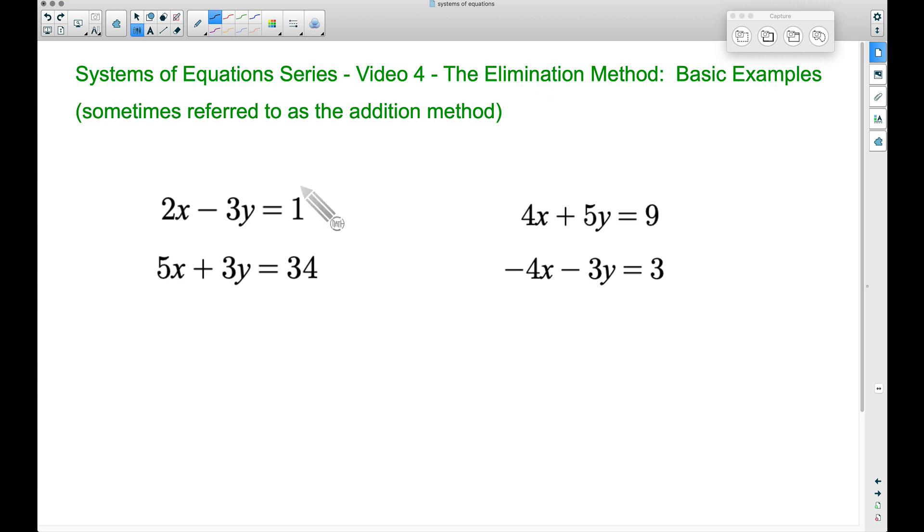We have two examples that are set up very similarly. The x's are lined up vertically, the y's are lined up, the equals are lined up, and the constant terms—these numbers without variables—are also lined up. If your variables were not lined up, you could rearrange the equations to line them up. We'll see that in future videos.